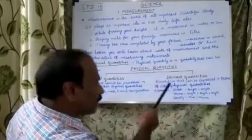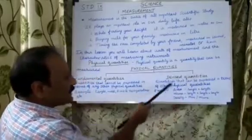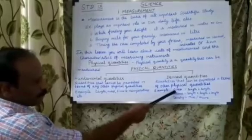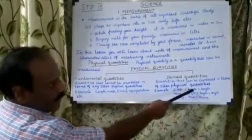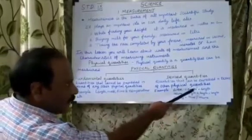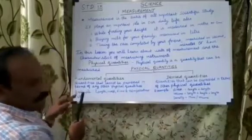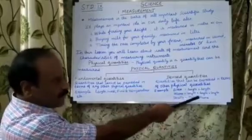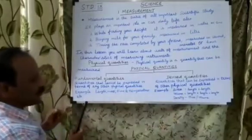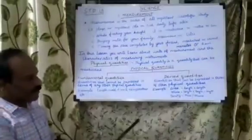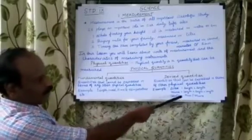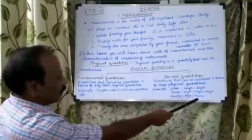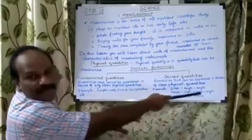Derived quantities are quantities that can be expressed in terms of other physical quantities. For example, area — area is measured in length into length, and length is a fundamental quantity. Next, volume — volume is measured in length into length into length, which is a fundamental quantity. Next, density — density equals mass divided by volume, where mass is a fundamental quantity and volume is measured in length into length into length.